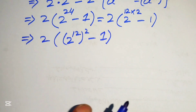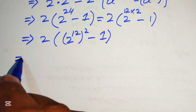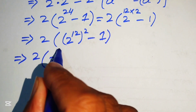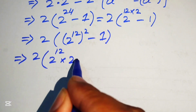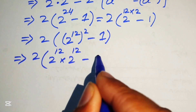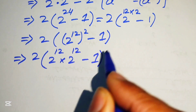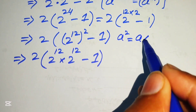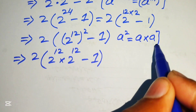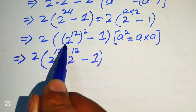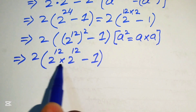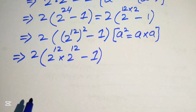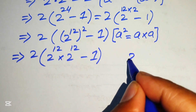We write (2^12) squared in expanded form: 2 times (2^12 multiplied by 2^12) minus 1, because a squared equals a times a. Our next target is to find the value of 2 to the power of 12.